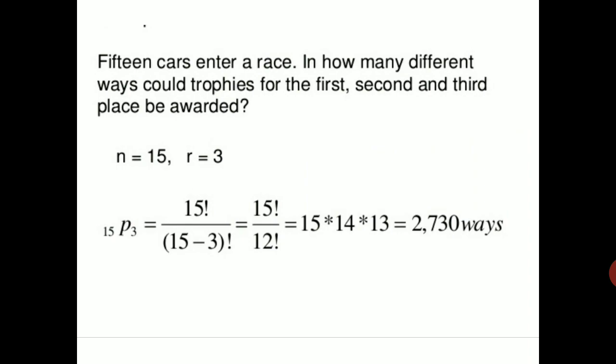15 cars enter a race. In how many different ways could trophies for 1st, 2nd, and 3rd place be awarded? Here n equals 15 and r equals 3, so we calculate 15P3 equals 15 factorial divided by (15 minus 3) factorial, which equals 15 × 14 × 13 equals 2,730 ways the trophies can be awarded.